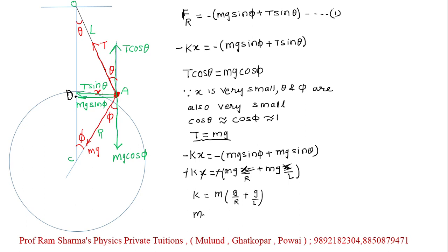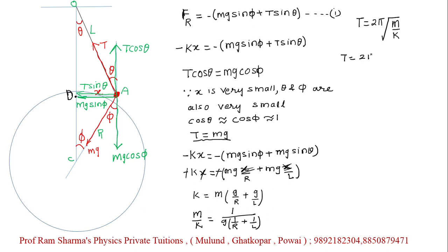We know the time period is T = 2π√(m/k). Substituting the value of m/k, we get the final answer: T = 2π√(1/g × 1/(1/R + 1/L)). This is the time period of a very large pendulum — a pendulum whose length is comparable to the radius of the Earth.